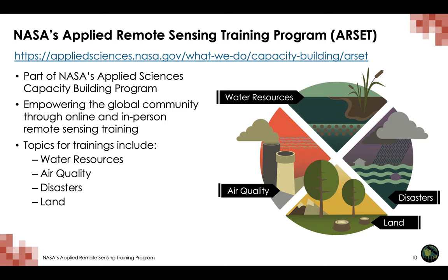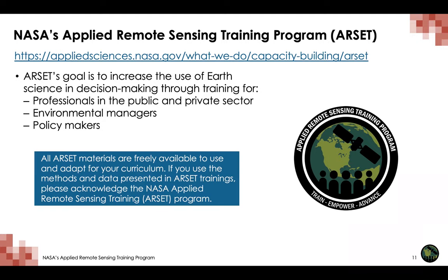ARSET empowers the global community through both online and in-person remote sensing training. Thematic areas for trainings include water resources, air quality, disasters, and land. The goal of the ARSET program is to increase the use of earth science in decision making through training for professionals in the public and private sectors, environmental managers, as well as policy makers. All ARSET materials are freely available to use and adapt for your curriculum. If you use the methods and data presented in ARSET trainings, please acknowledge the NASA Applied Remote Sensing Training Program.